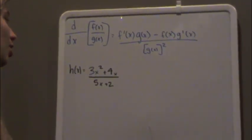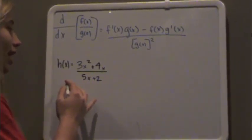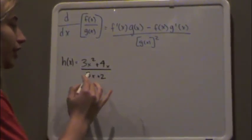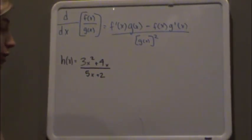Ok, so for example we have this function right here: h of x equals 3x squared plus 4x over 5x plus 2. And we want to derive this using the quotient rule.